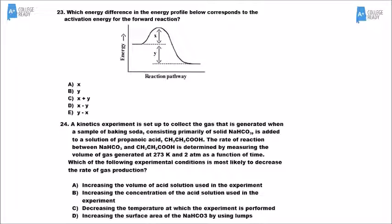For number 24, this is not a mathematical answer. It's asking which option would lower the rate of reaction and cause a decrease in gas production. Increasing the volume of acid adds more reactant — that would make it go faster. Increasing the concentration would also make it go faster. But if you decrease the temperature, we know that lowers the rate of reaction, so gas production would actually decrease. So C is the answer.